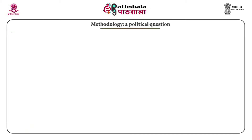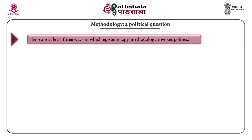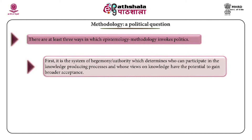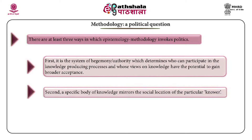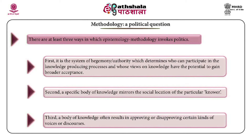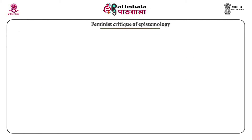Methodology is also a political question. There are at least three ways in which methodology invokes politics. First, it is the system of hegemony which determines who can participate in the knowledge-producing processes and whose views have the potential to gain broader acceptance. Second, a specific body of knowledge mirrors the social location of the particular knower. Third, a body of knowledge often results in approving or disapproving certain kinds of voices or discourses.